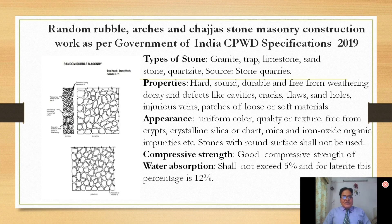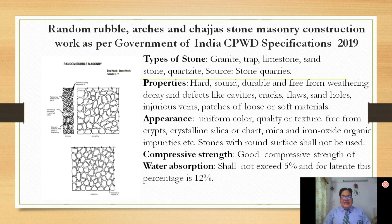The next type of masonry is random rubble, which can be used in various arches and chajjas. Stone is originated from various types like granite, trap, limestone, sandstone, quartzite, etc.